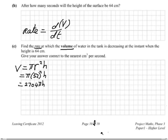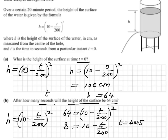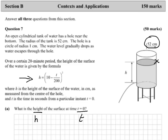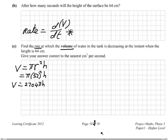We have volume in terms of h, but since we're finding dV/dt we need to get t into the equation somehow. We need some connection between height and time — and that connection is the original equation from the question: h equals 10 minus t over 200, all squared. So volume becomes 2704 pi times the quantity 10 minus t over 200, all squared — we've simply replaced h with that expression.